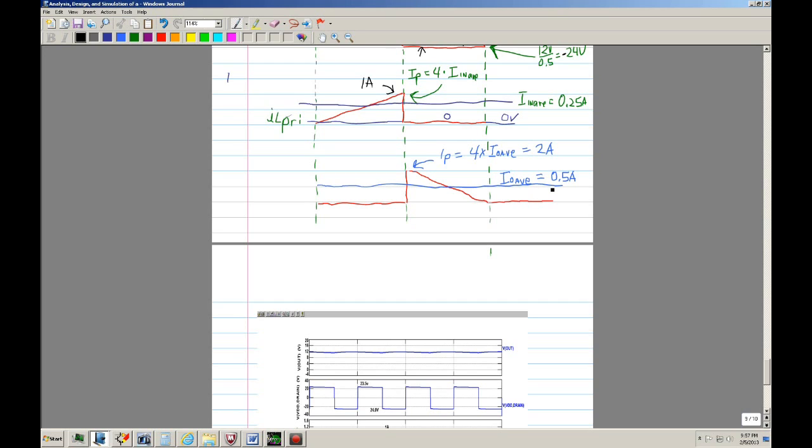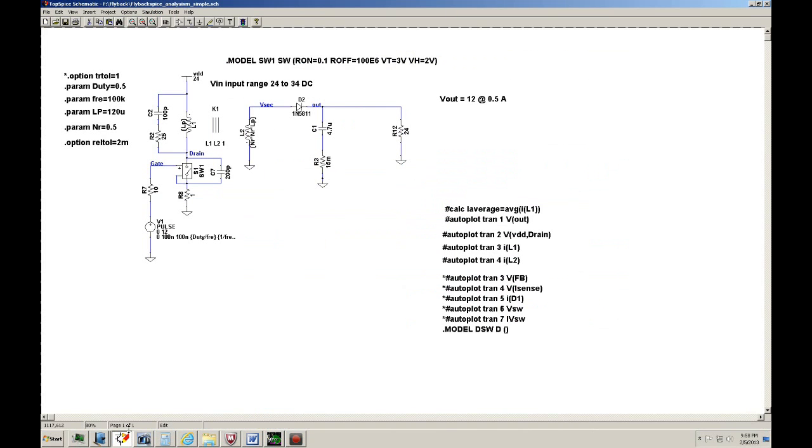We know that this peak current is supposed to be 1 amp. And likewise the output, we know that the output current of the supply supplying the load is supposed to be half an amp. We can make the same assumption that the peak current of the secondary inductor is going to be four times. So in this case, we should have two amps right there.